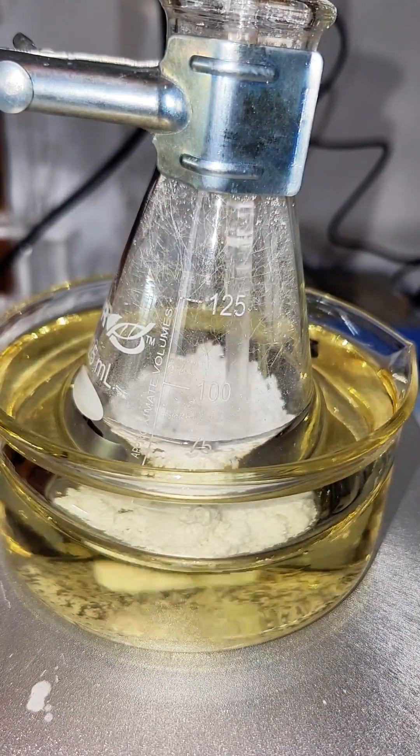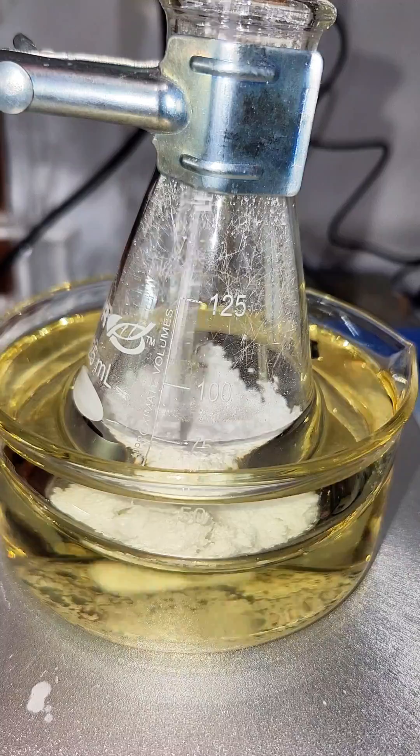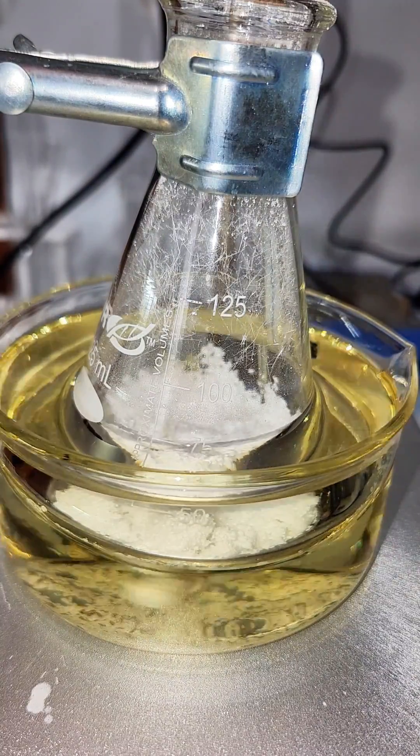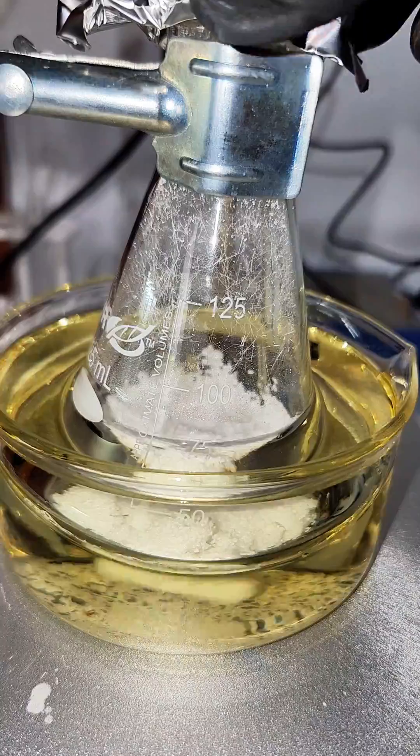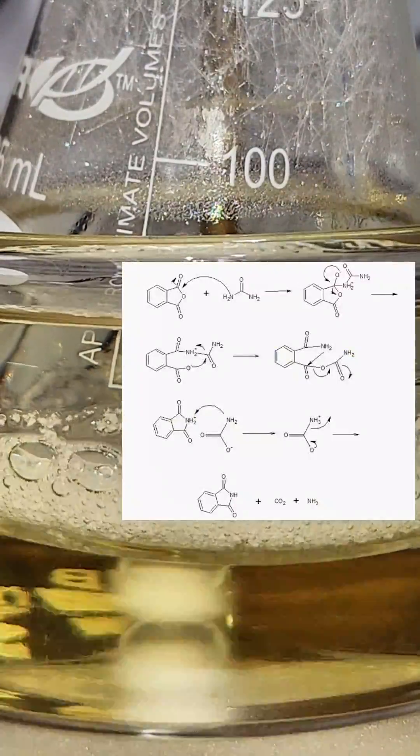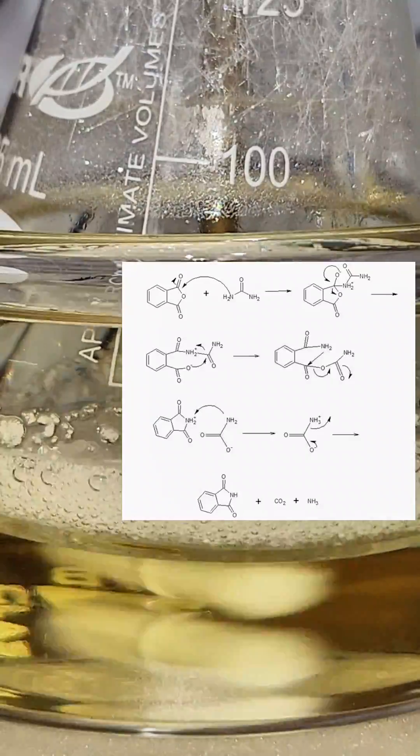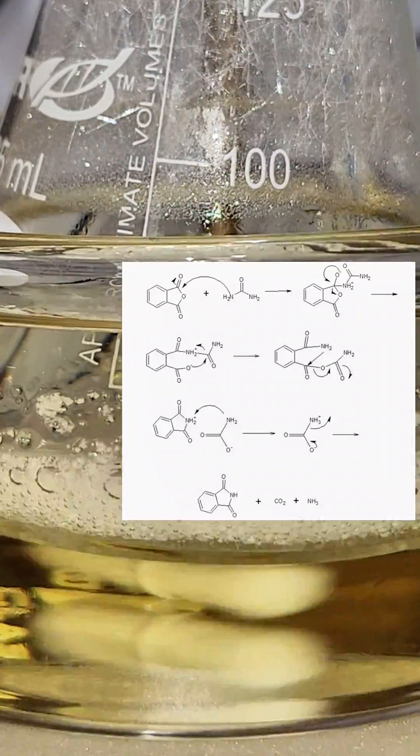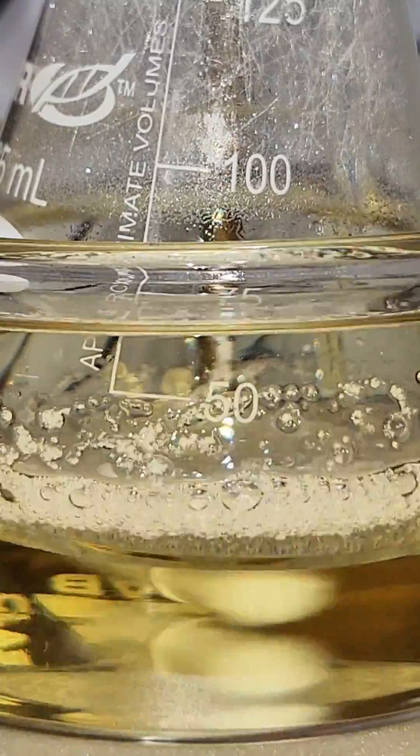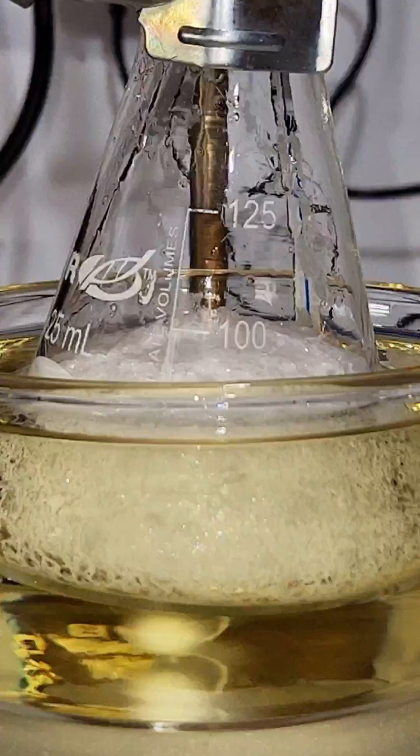The reason the two are able to react is that the carbonyl group on the anhydride is extremely electrophilic. This carbonyl is attacked by the fairly nucleophilic nitrogen in the urea, which sets off a series of proton and electron transfers. This results in phthalamide with an extra hydrogen as well as a carbamide ion. This carbamide ion reacts with the extra hydrogen and then breaks apart into carbon dioxide and ammonia gas, which float away.